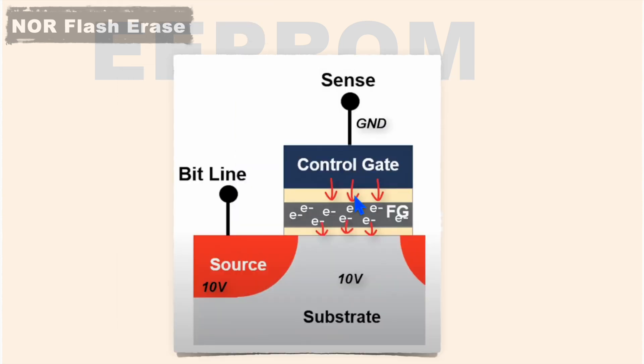And to erase it, we apply 10 volts to substrate while its gate is grounded. So in this case, the electrons present in this floating gate will be moved towards this substrate. And that's how it can be erased. And same applies to EEPROM as well.